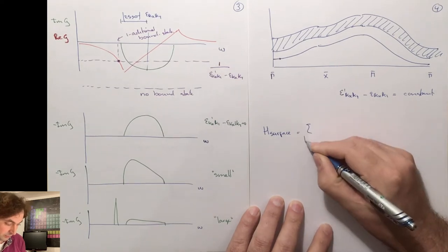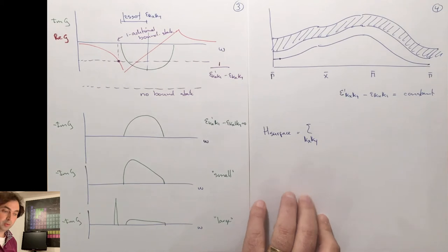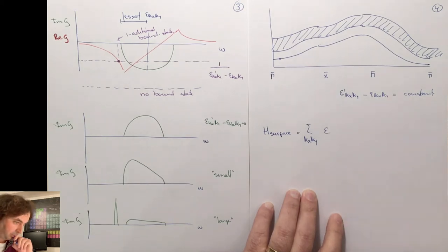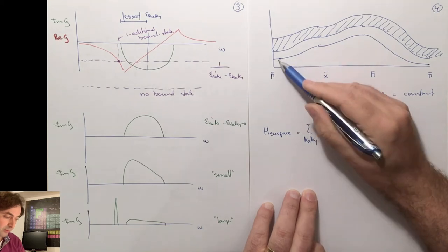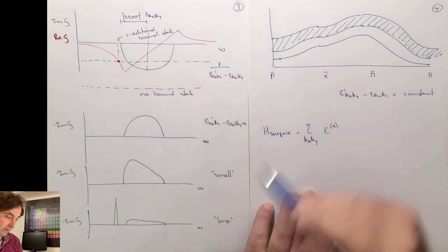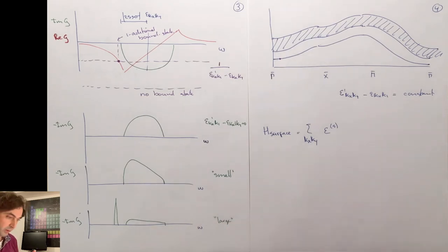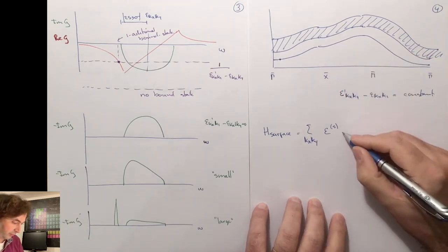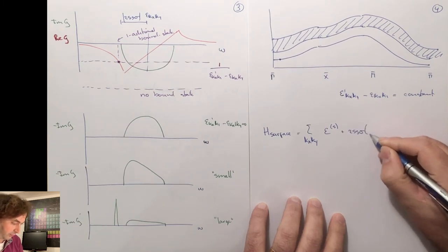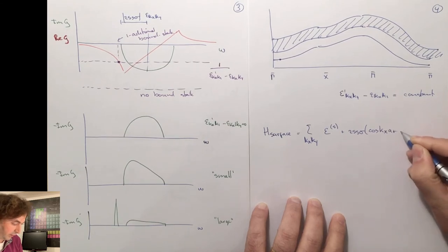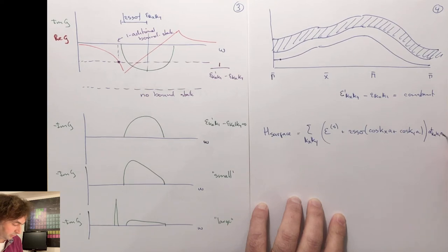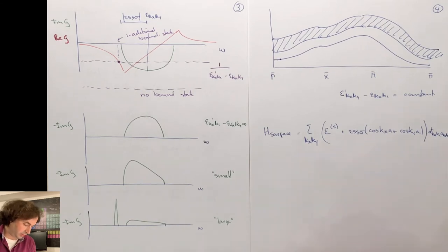We can define a Hamiltonian for those particles — that is the surface Hamiltonian. We have now truly just a two-dimensional system where we have our on-site energy, which is the bound state energy. We know that it sits somewhere inside an energy window where there are no other states. And then we have the dispersion in the x and y direction, with creation and annihilation operators as a function of kx and ky — perfectly two-dimensional particles moving on the surface.